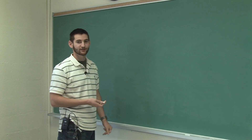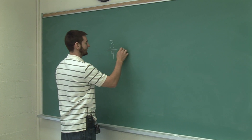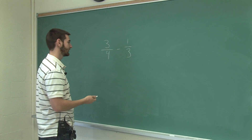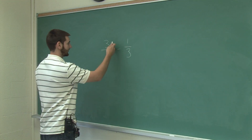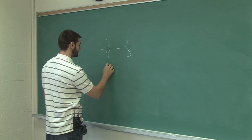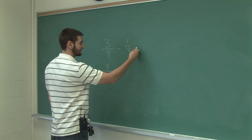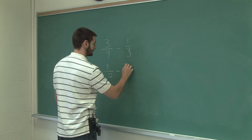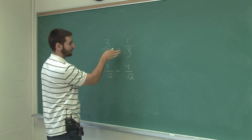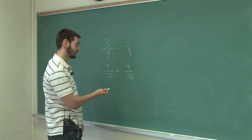Now to subtract fractions with different denominators, let's take 3 quarters minus 1 third. You can't subtract them directly, so we need to change them to have a common denominator. We're going to make these into 12ths — multiply the top and bottom by 3 over 3, which is 1. And to get this into 12ths we multiply the top and bottom by 4. So 3 quarters is equivalent to 9 twelfths and 1 third is equivalent to 4 twelfths — we haven't changed the problem but we have common denominators, which allows us to do the subtraction.